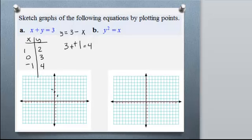Okay, and then we have (-1, 4). Now that you have these points, you just draw your line. There we go.